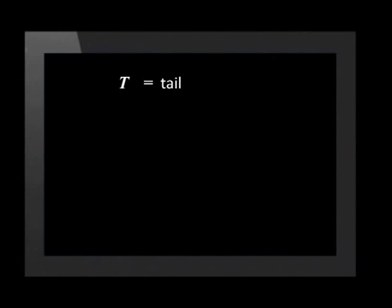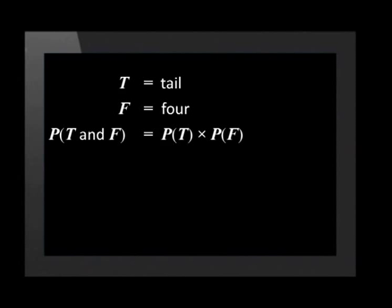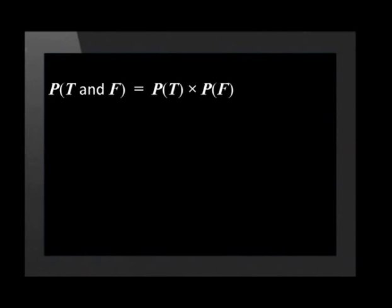We will use the product rule for independent events to get the same answer. Let T be the event getting a tail on the coin and F be the event getting a four on the dice. The probability of getting a tail and a four equals the probability of getting a tail times the probability of getting a four — one half times one sixth — which equals one twelfth, or approximately 8.3%.